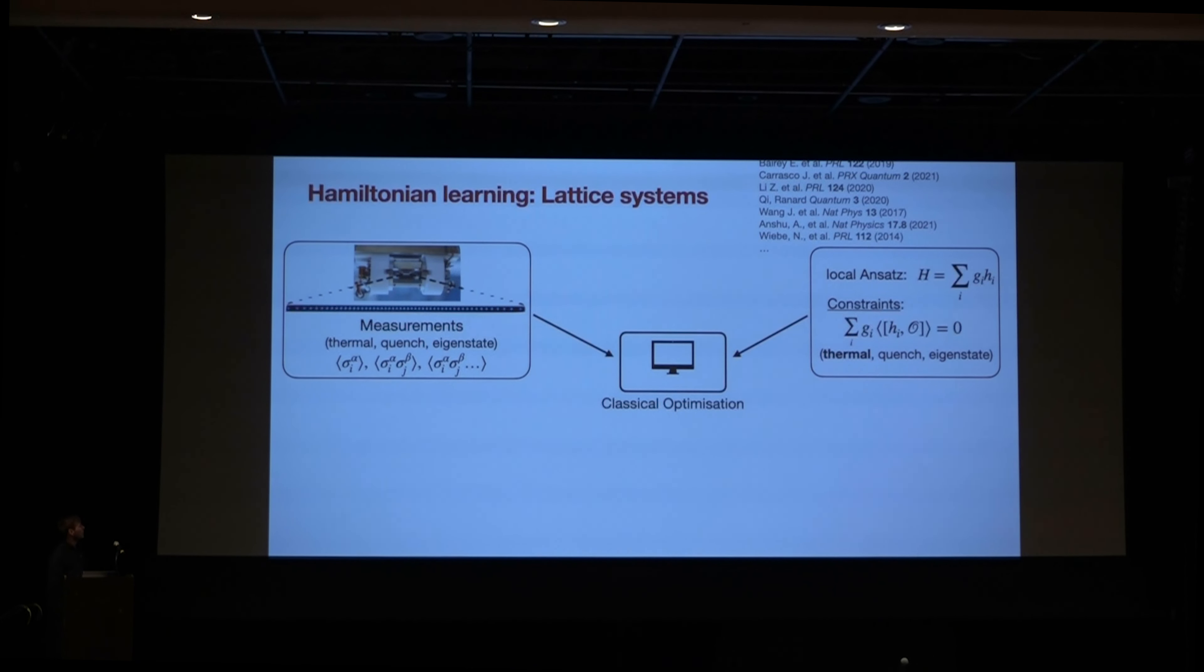So here I take the example of an ion trap. It's actually the ion trap of Christian Roos in Innsbruck. And so that's the first ingredient that you have to actually quantum system. And then there's the second ingredient, which is an ansatz for a Hamiltonian, which you combine in a classical optimization.